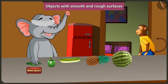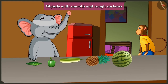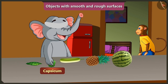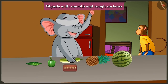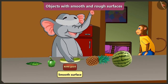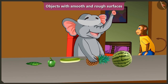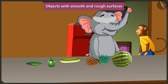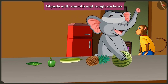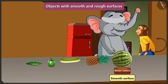This is bitter gourd — it has a rough surface. This is capsicum — it has a smooth surface. And this is a bottle gourd — this too has a smooth surface. Absolutely right, Appu! Come on, now try and feel these fruits. My hand is not sliding easily on this surface — this is a pineapple with a rough surface. And my hand is sliding easily on this surface, so this is a watermelon with a smooth surface.